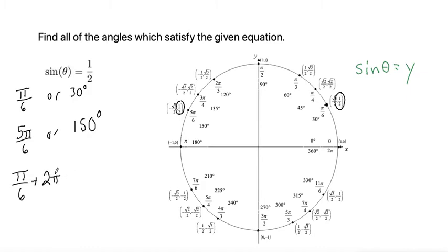And that would be the next solution, adding just 2 pi would be just the next solution. But we can go around as many times as we want. So in order to account for going around as many times as we want, let's add a k.